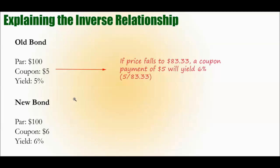However, they might buy the old bond if the price goes down to the point where the yield is the same. So if the price in this instance, if the price were to fall to $83.33, a coupon payment of $5 will yield 6%, right? Because $5 over $83.33.